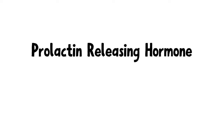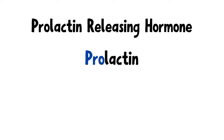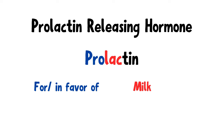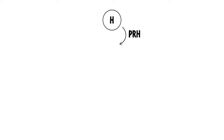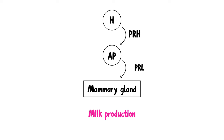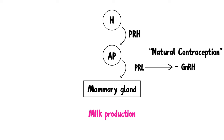Let's move on to the third hormone, PRH, also known as prolactin-releasing hormone — a hormone that releases prolactin. Prolactin can be interpreted as 'for milk,' reflecting its primary role in promoting milk production in breastfeeding women. PRH is synthesized in the hypothalamus and stimulates the anterior pituitary gland to release prolactin, which acts on the mammary glands. At the same time, prolactin inhibits GnRH — because you don't want to have another baby when you've just pushed one out. We call this natural contraception.